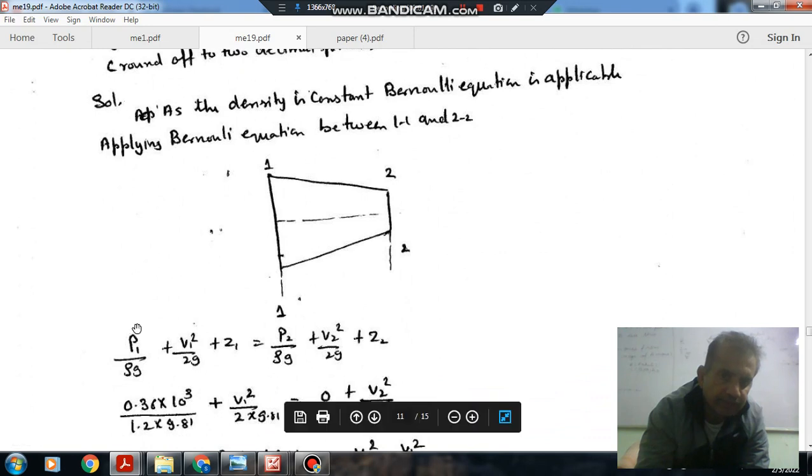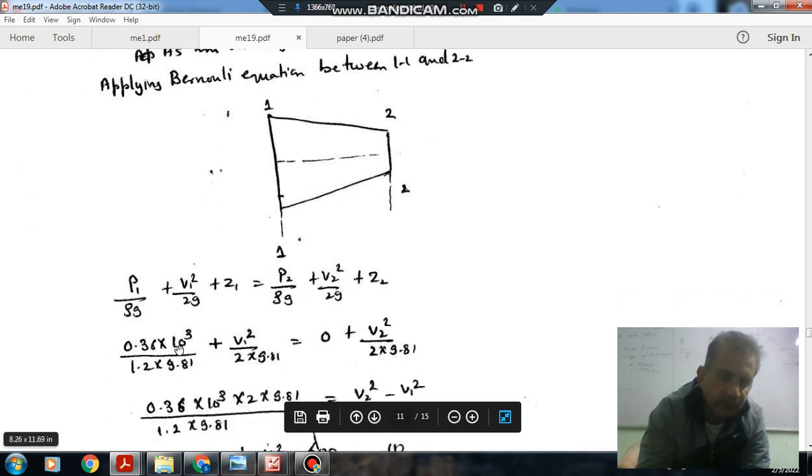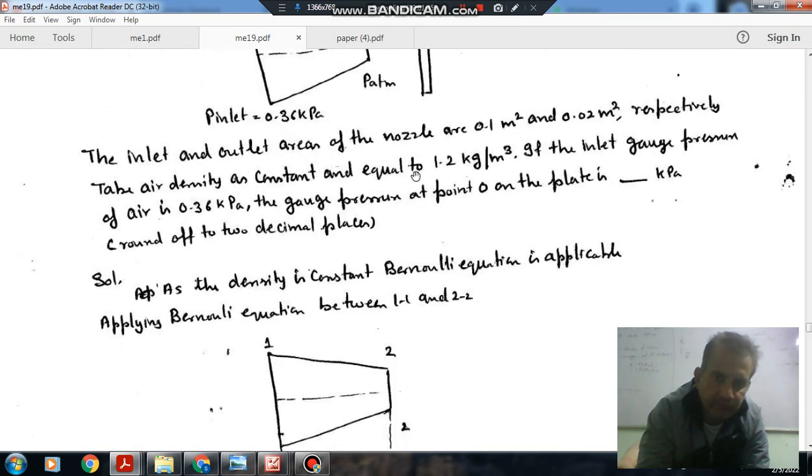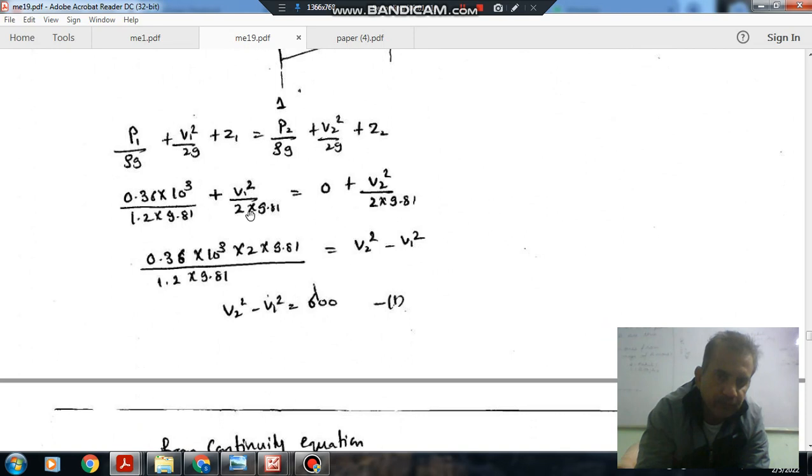P1 is 0.36. Since this is gauge pressure, this is atmospheric pressure, so we will take it as 0. So P1 by ρg plus V1² by 2g plus Z1 equals P2 by ρg plus V2² by 2g plus Z2. P1 is 0.36 Pascal and P2 is 0. From this we can get V2² minus V1² equals 600.